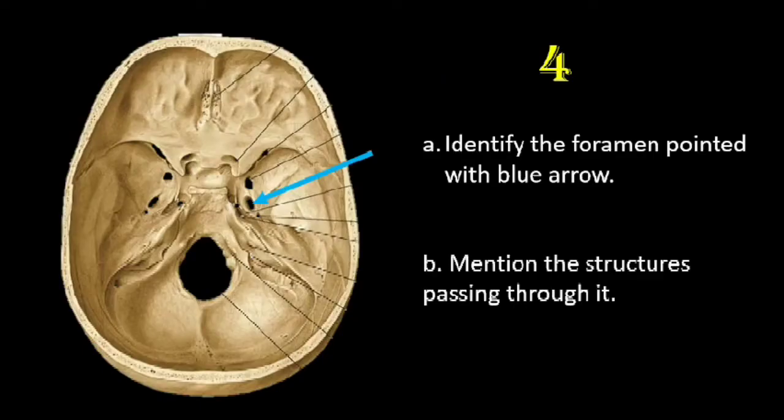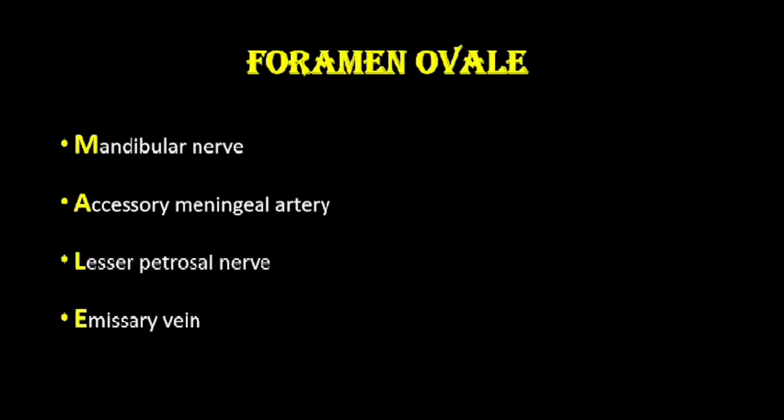The next question is: identify the foramen pointed with the blue arrow and mention the structures passing through it. This is a favorite question — I have already discussed this when we covered the middle cranial fossa. This foramen is the foramen ovale.